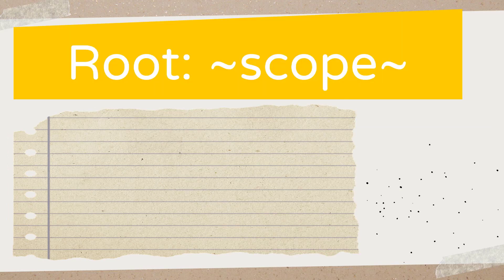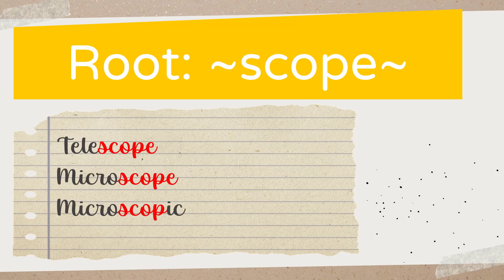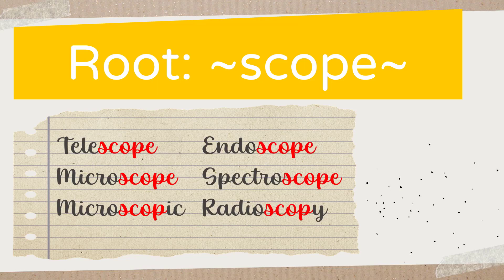Today we're going to talk about the word 'scope.' As a chemistry and physics teacher, I use the word 'scope' a lot. For example, it could be telescope, microscope, microscopic, endoscope, spectroscope, or radioscopy. There are so many ways we can use 'scope.' But technically, even if I don't know what these words mean, I can actually guess the meaning, or at least have a general idea of what those words actually mean.